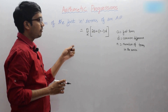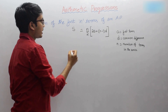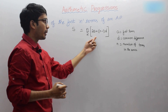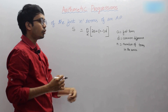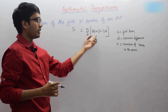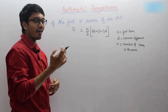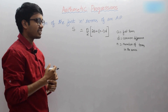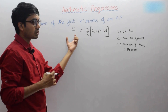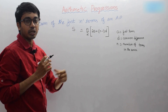The sum S of the first n terms of an arithmetic progression is n by 2 into 2a plus n minus 1 into d. So if you know the number of terms n, the first term, and the common difference — the fixed value we have learnt in previous classes — we can calculate the sum of all the terms which are in arithmetic progression.